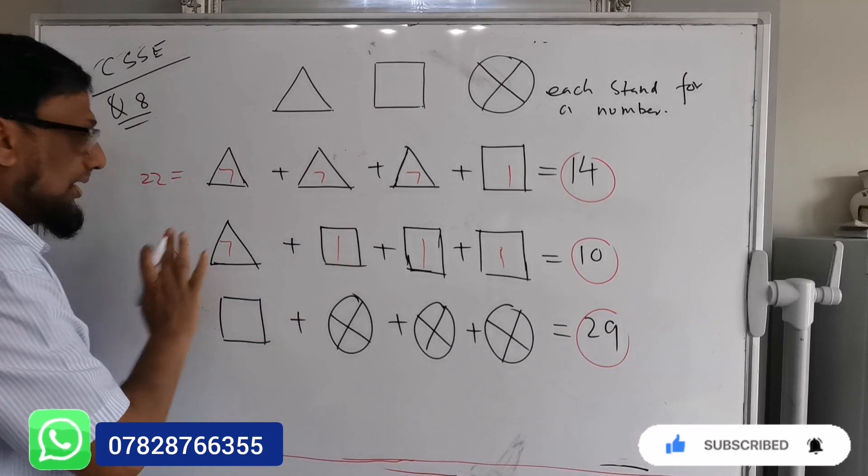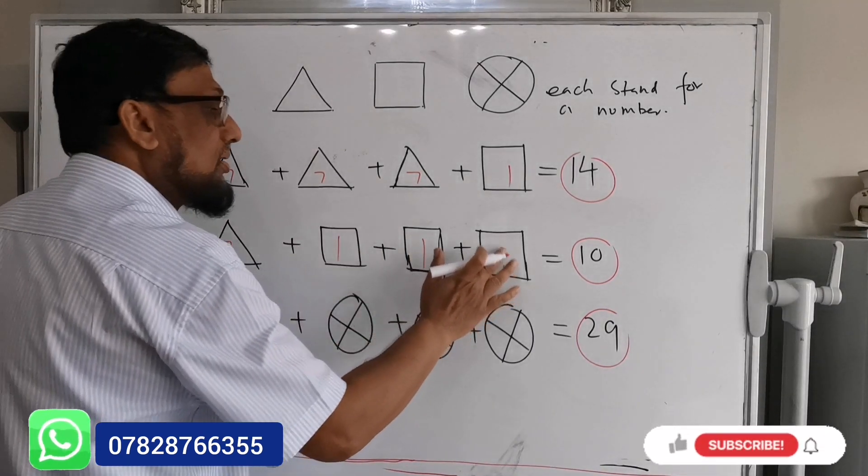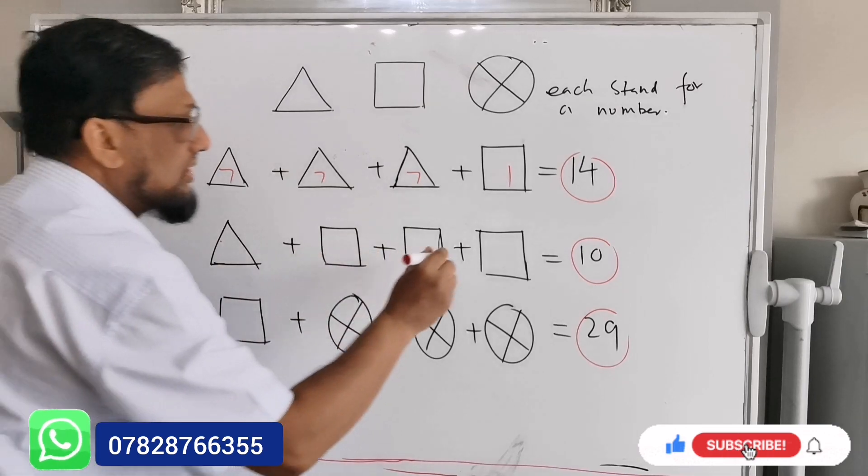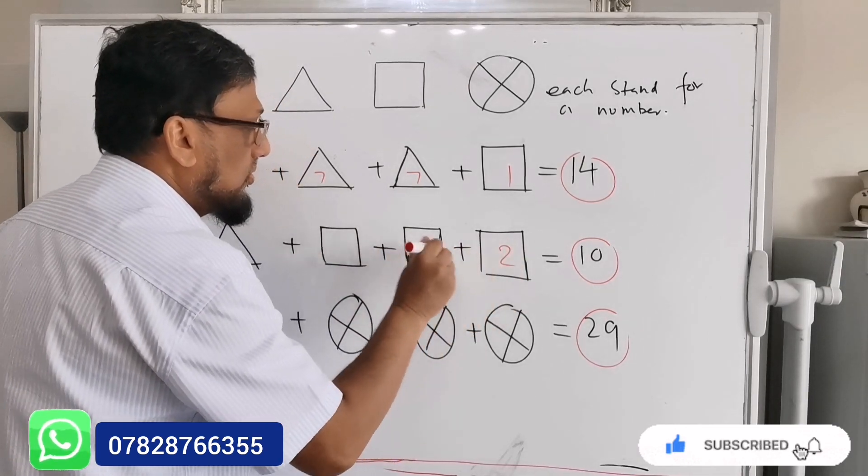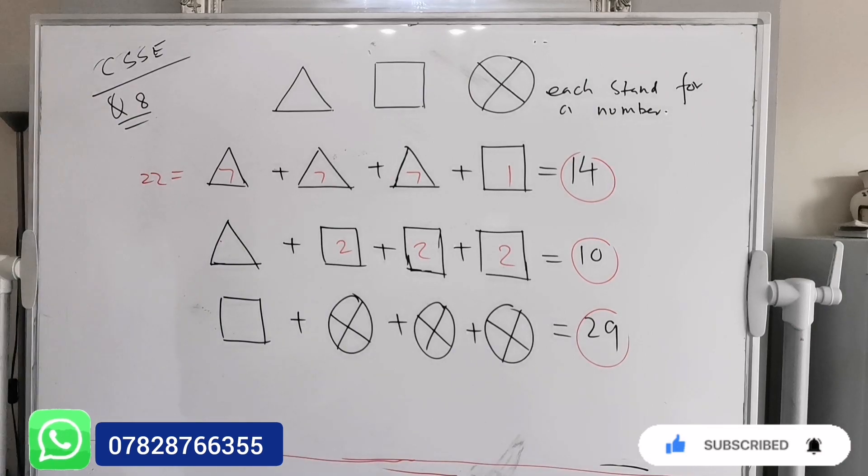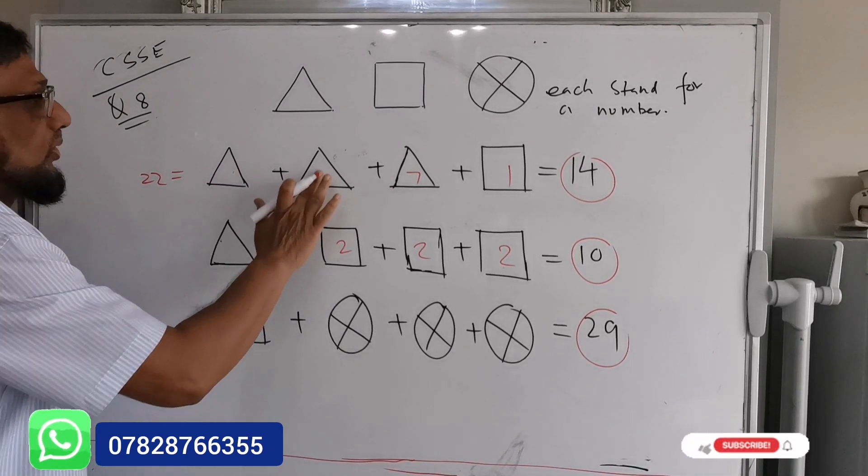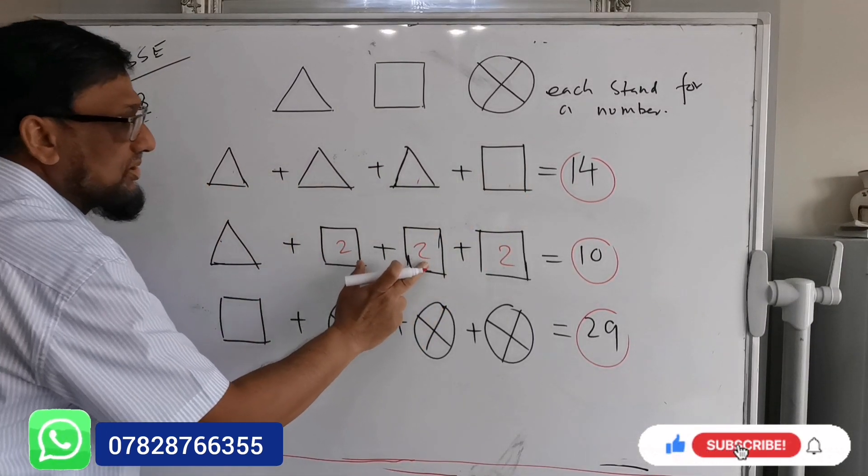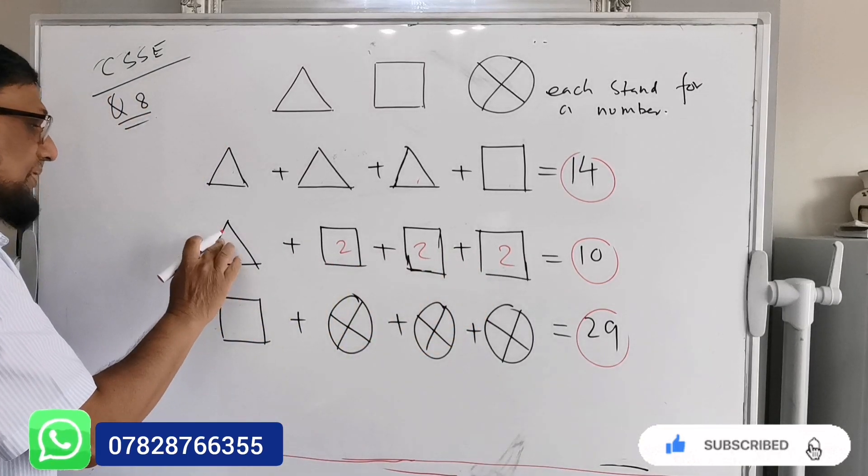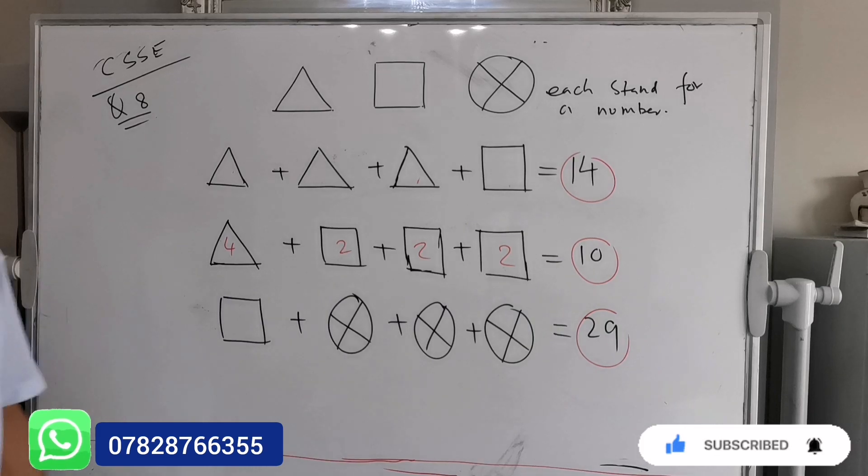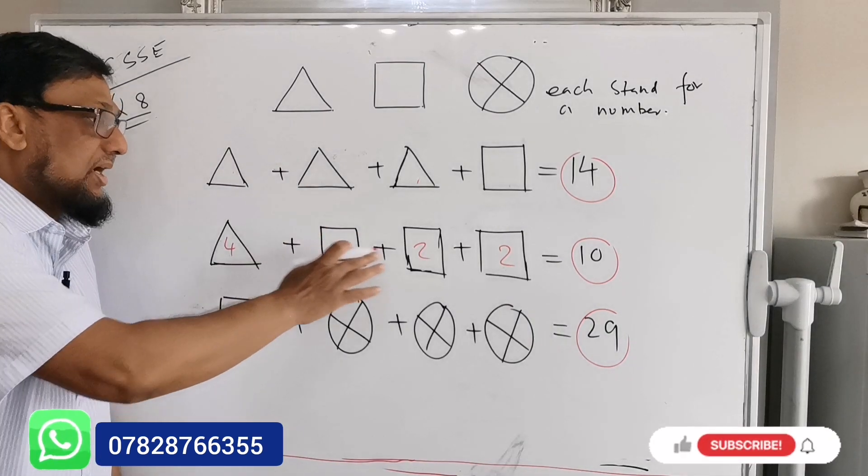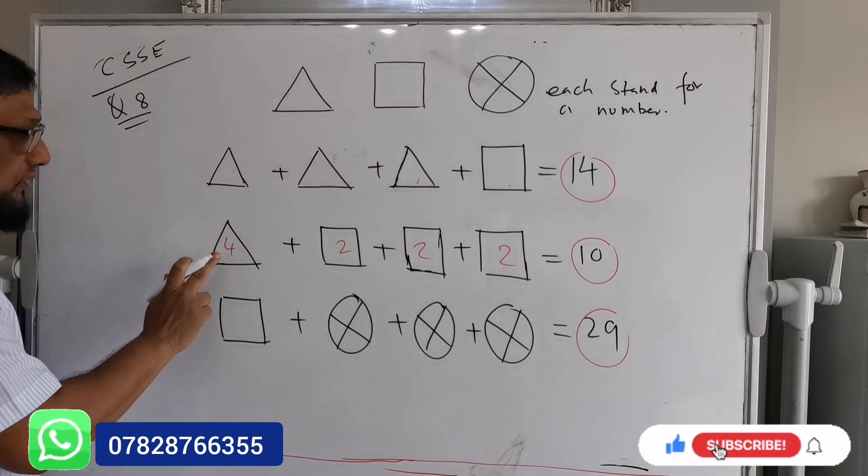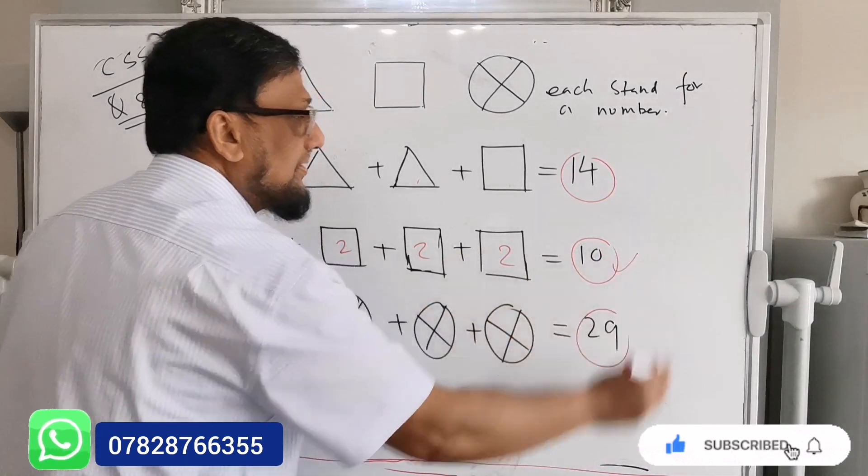So the one can't be one. Now we're going to put here the second number, which is two, two, and two. If I put here number two, look at here: if two plus two plus two is six, and six plus four, so it means the square value I assume here is two. So it means the triangle will be four.